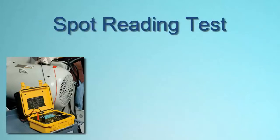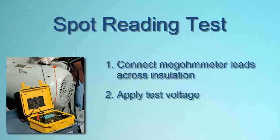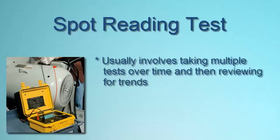The first type of insulation resistance test we'll look at is the spot reading test. This is relatively straightforward — simply connect the megameter leads across the insulation to be tested, apply test voltage for a fixed period of time, typically 1 to 10 minutes, and then take a resistance reading. Spot testing is suitable for a system with small or negligible capacitive effect, for example a short wiring run. A single spot reading test is of limited value, but the results become meaningful when a series of tests — all featuring the same voltage and duration — are performed over time and the results compared.